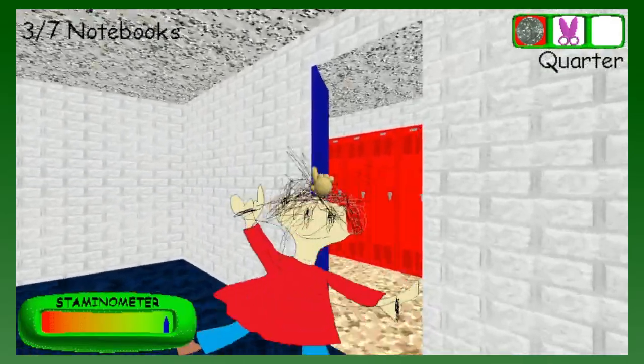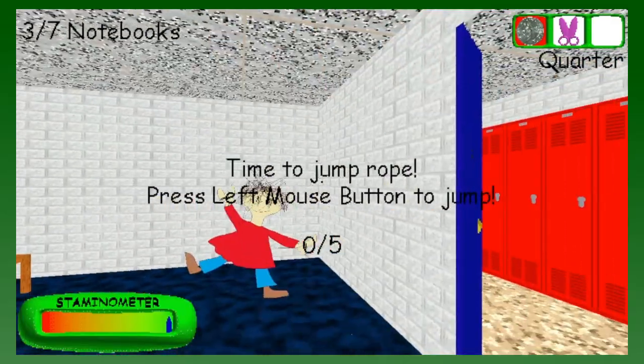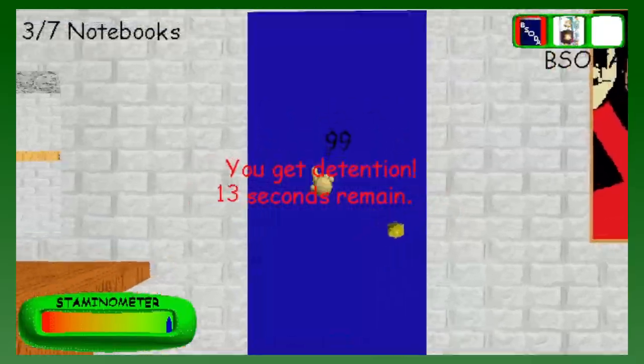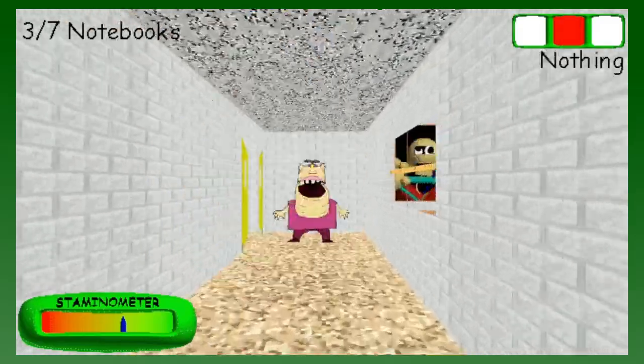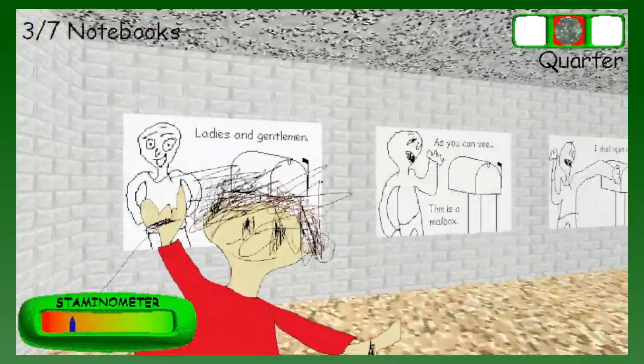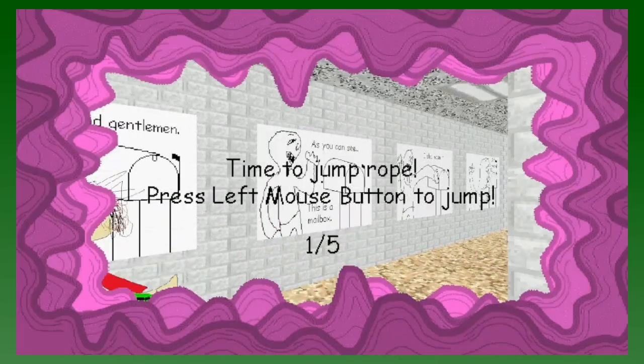Thankfully, there's the scissors that you can find in miscellaneous parts of the map which allows you to cut her rope. Though do keep in mind that if the principal were to see you do this, you'd get sent to detention for bullying. Speaking of, there's the bully too. He doesn't do much aside from block your path until you give him whatever you're holding, but if you don't have anything in your inventory, then unfortunately he won't let you pass.